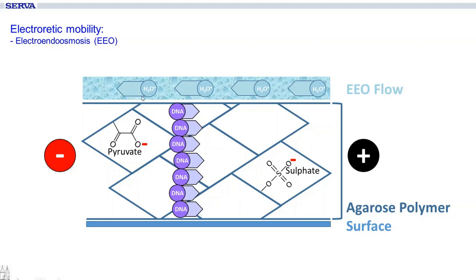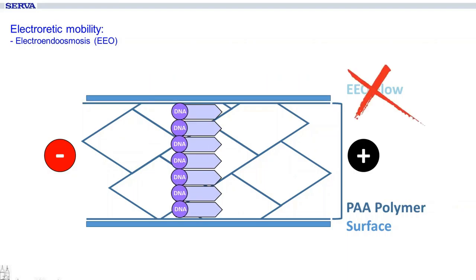This effect and the electroosmotic flow together lead to diffuse bands, as shown here, with a quite slow migration speed. To avoid this EEO, you can buy low-EEO agaroses that are better purified, but the only problem with this product is it is quite expensive due to the purification step. There are no side groups in polyacrylamide gels, so there is no deprotonization, and the electroendoosmotic effect fails to appear.